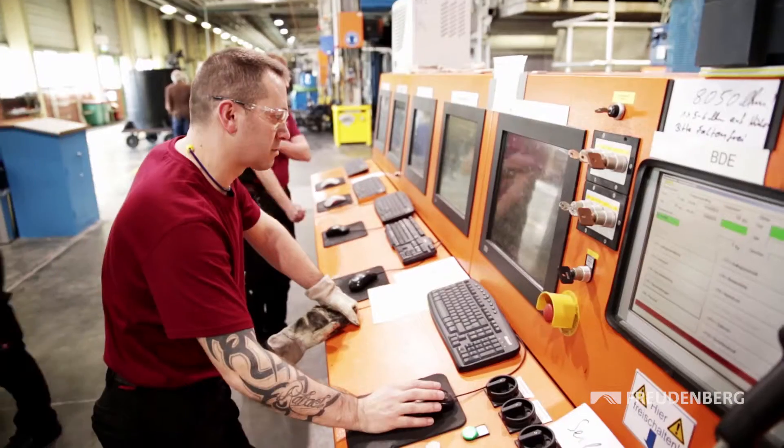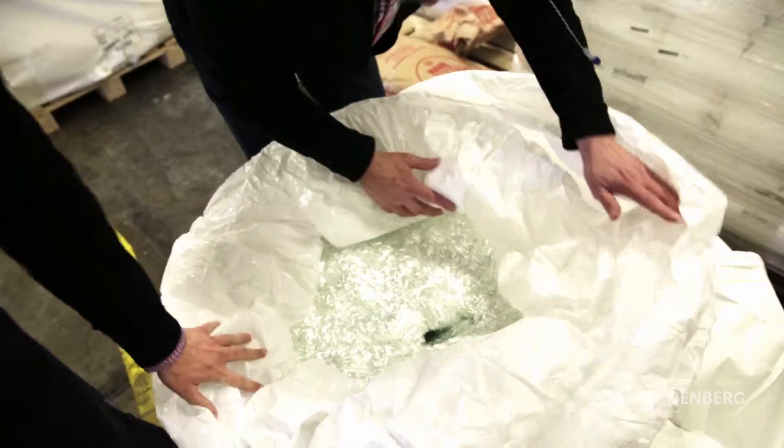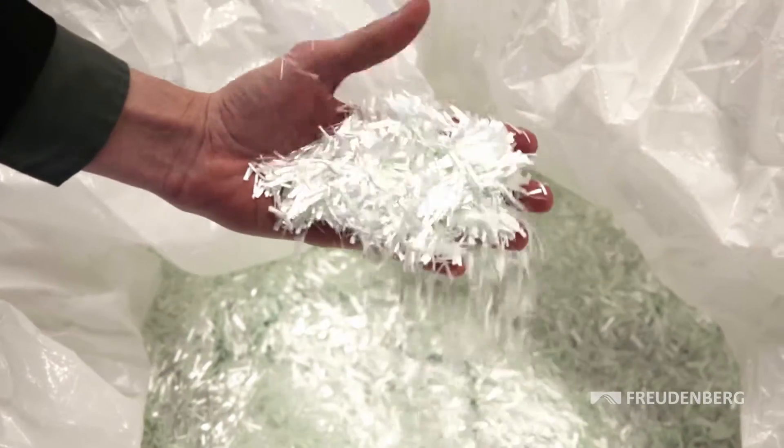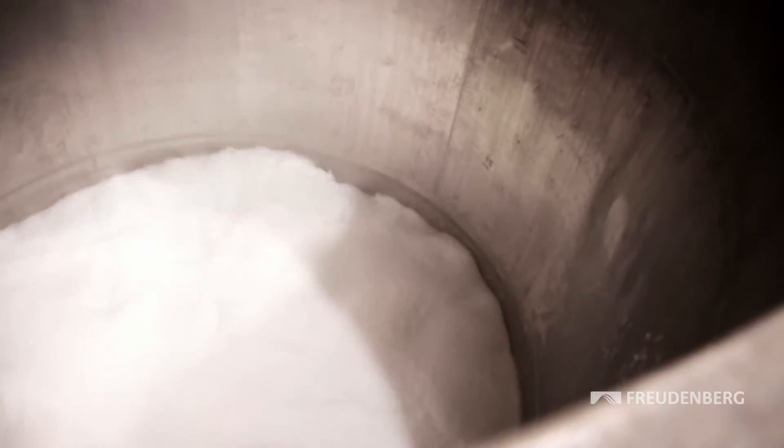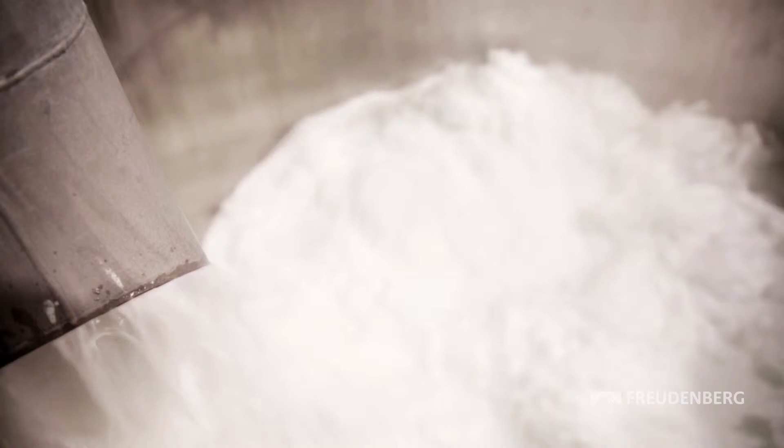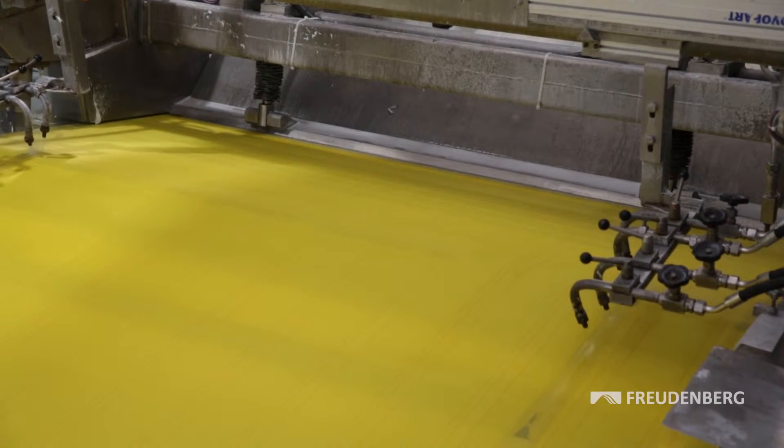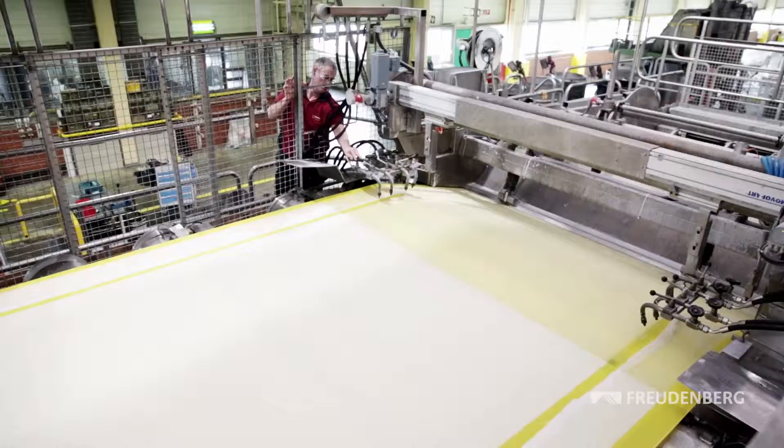The production method of the 0.27 mm thick fabric is similar to that of paper. Cellulose and circuit fibers dissolved in water are poured onto a sieve. The water flows away, leaving the fibers behind. These are then bonded together with synthetic resin.